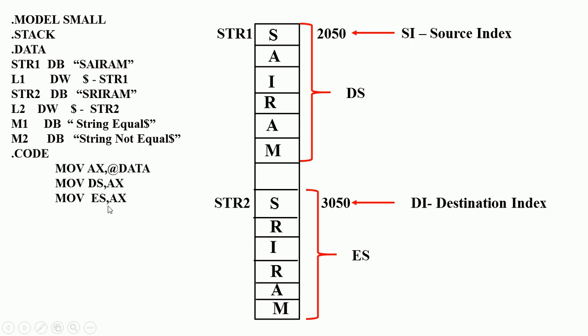To use compare string instruction, we know that the segment address of string 1 must be in DS, the segment address of string 2 must be in ES. The offset address of string 1 must be in SI and the offset address of string 2 must be in DI. Therefore we initialize all these things. Load effective address SI,